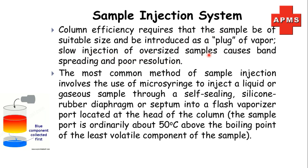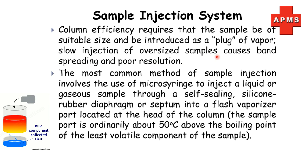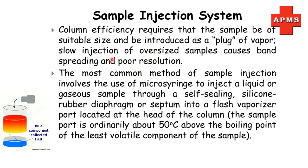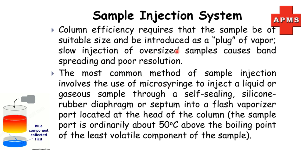Slow injection of oversized samples causes band spreading or poor resolution. Oversized samples mean samples with a higher amount of analyte. If we introduce these samples slowly, they spread inside the column as a band and will not separate completely, giving poor resolution. Due to this poor resolution, components will not be completely separated inside the column, and we will not get clearly resolved peaks at the detector — resulting in less precise and less accurate results.